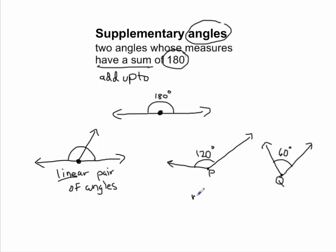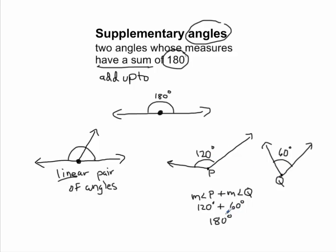We just have to check: does it meet the definition — do these two angles add up to 180 degrees? The measure of angle P plus the measure of angle Q — what is that sum? The measure of angle P is 120 degrees, plus the measure of angle Q is 60 degrees. If I add these two measures I get 180 degrees. So to answer the question: are these two angles supplementary? Yes — since they have a sum of 180 degrees, angle P and angle Q are supplementary angles.